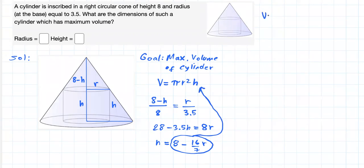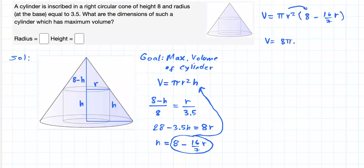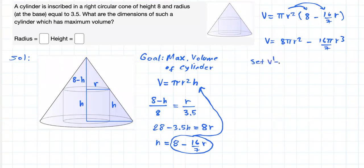So I will get that V, the volume, should be equal to pi r squared times h, but h is 8 minus (16/7) times r. Multiplying, we will get that the volume is equal to 8 pi r squared minus (16 pi over 7) times r cubed.